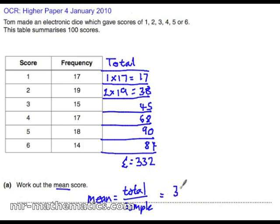So 332 divided by the sample size which it tells you as 100 gives you the mean score of 3.32. Thank you.